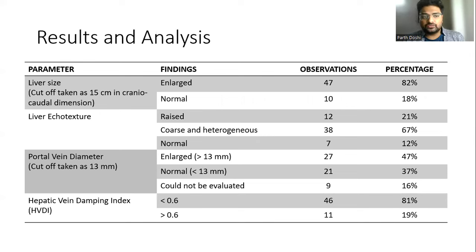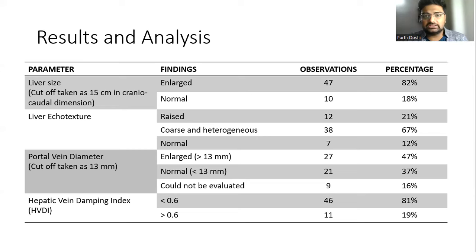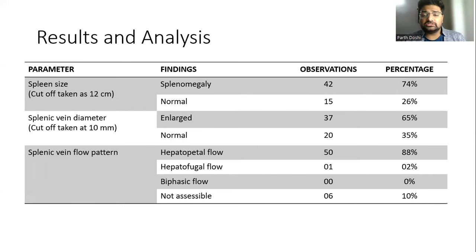Results and analysis are as follows. Almost 82% of the patients had hepatomegaly, i.e., more than 15 centimeters in craniocaudal dimension, and 67% showed coarse and heterogeneous echotexture. Almost 47% of the patients had an enlarged portal vein diameter more than 13 mm. Hepatic vein damping index less than 0.6 was observed in almost 81% of cases. 74% of the patients showed splenomegaly with spleen size more than 12 centimeters, and 65% had enlarged and dilated splenic vein with a cut-off of 10 mm.